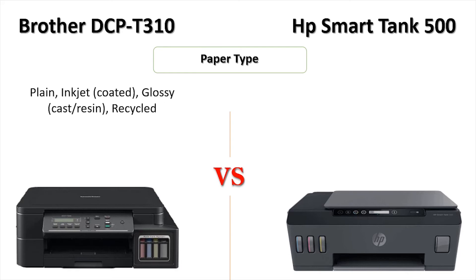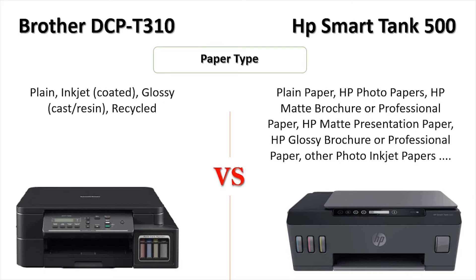Paper Type — Brother DCP T310: Plain, Ink Jet, Coated, Glossy, Cast/Resin, Recycled. HP Smart Tank 500: Plain Paper, HP Photo Papers, HP Matte Brochure or Professional Paper, HP Matte Presentation Paper, HP Glossy Brochure or Professional Paper, Other Photo Ink Jet Papers.